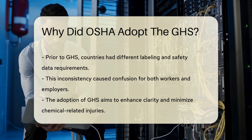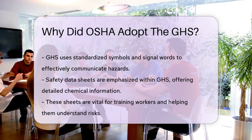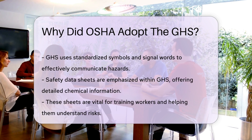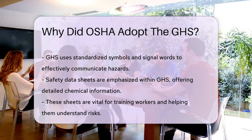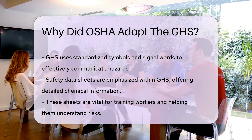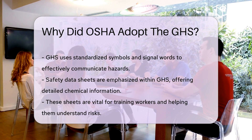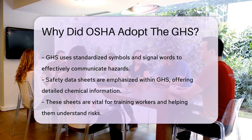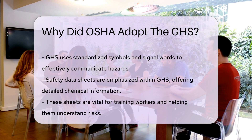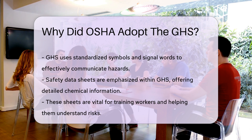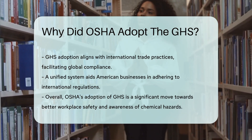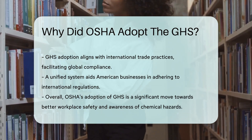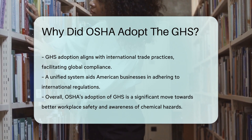The system utilizes standardized symbols and signal words to convey hazards effectively. Additionally, GHS emphasizes the importance of safety data sheets, which provide detailed information about chemical substances. These sheets are crucial for training workers and ensuring they understand the risks. The adoption of GHS also aligns with international trade practices, as a unified system enhances trade by ensuring that safety information is recognized globally, helping American businesses comply with international regulations.